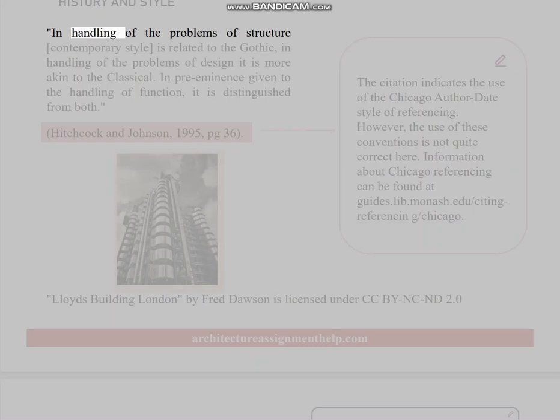In handling of the problems of structure, contemporary style is related to the Gothic. In handling of the problems of design, it is more akin to the Classical. In preeminence given to the handling of function, it is distinguished from both. Hitchcock and Johnson, 1995, page 36.